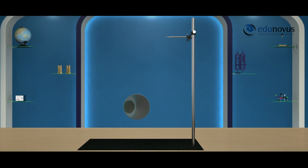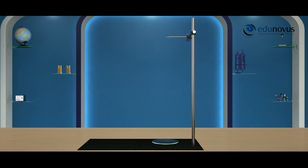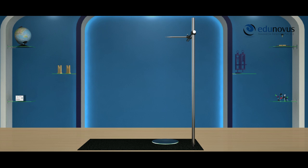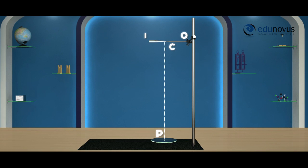Let us consider a concave mirror and place it on a horizontal surface of the vertical stand such that its principal axis is vertical. Here P is the pole of the mirror. Now clamp the object needle to the stand in such a way that the tip of the needle can be moved along the principal axis of the concave mirror. While looking into the concave mirror, move the object needle O along the principal axis until a sharp image I of the object needle is formed at the tip of the object needle. This point on the principal axis is the center of curvature C of the concave mirror.